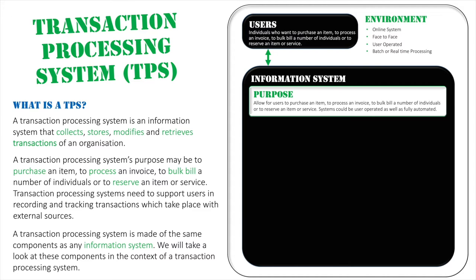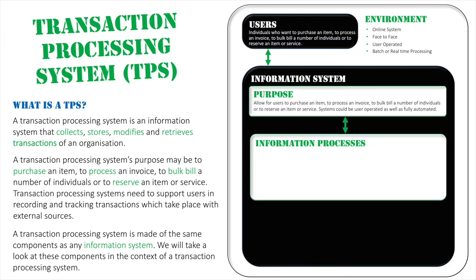There are two types of processing in this unit: batch processing, which accumulates transactions and processes them at a specific scheduled time, and real-time processing, where transactions must take place immediately. These are all factors that affect the type of transaction processing system being used.